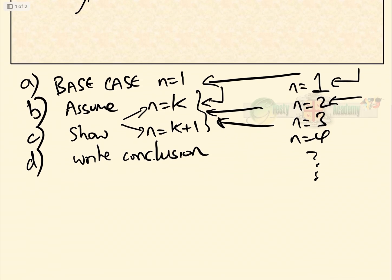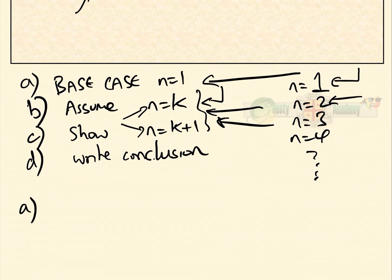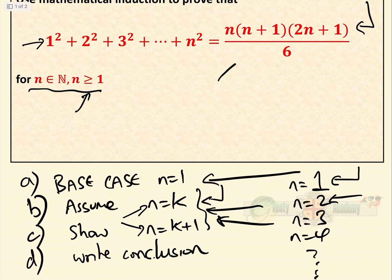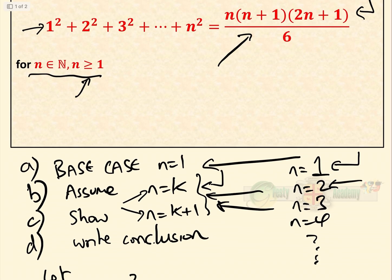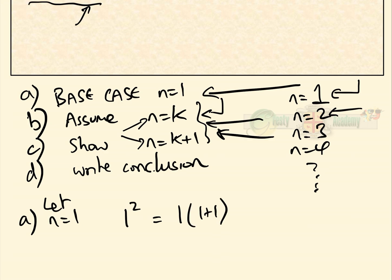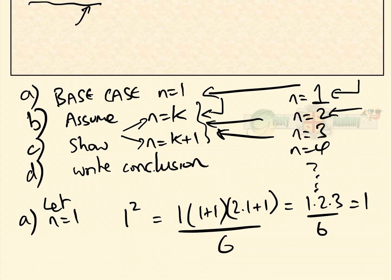So first of all, let's do our base case. For n equals 1, we need to prove that 1 squared equals, putting n equals 1 into our formula, 1 times (1+1) times (2×1+1) over 6, which equals 1 times 2 times 3 over 6, which equals 1. So the formula is good for n equals 1. That's the first part done — our base case.